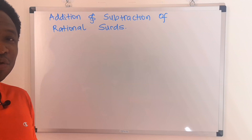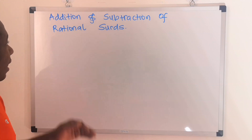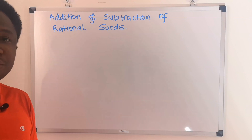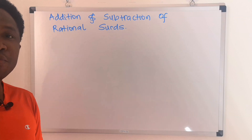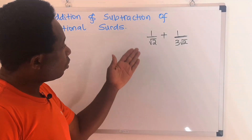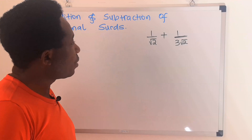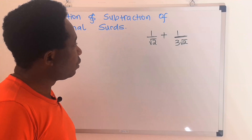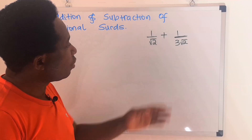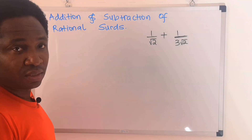In this video, we are going to consider addition and subtraction of rational surds. Let's consider 1 over the square root of 2 plus 1 over 3 root 2.